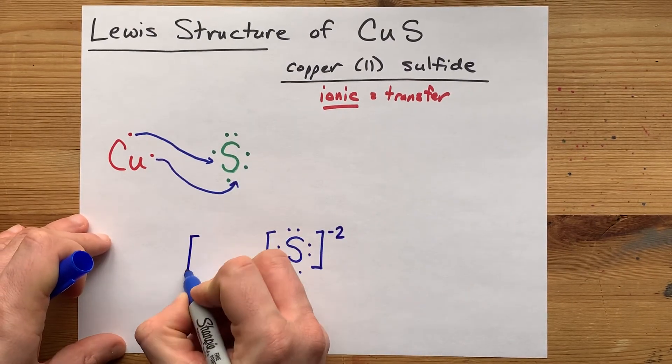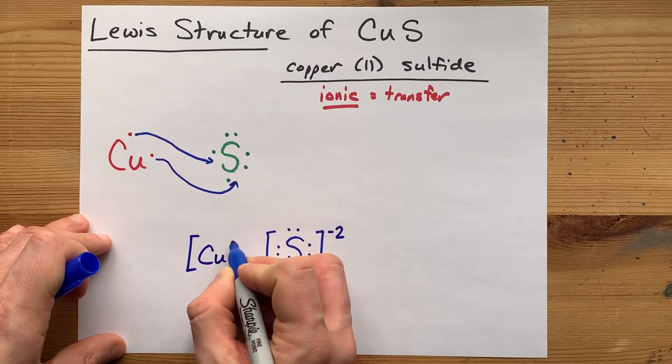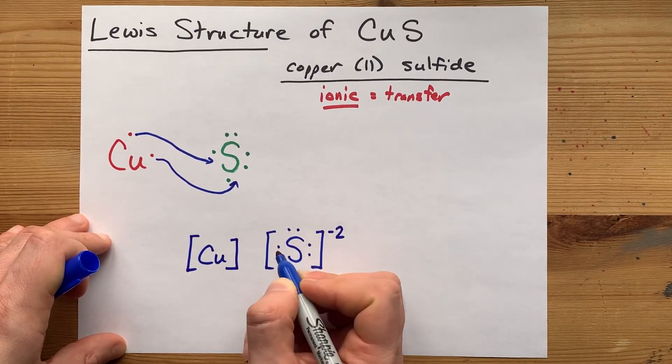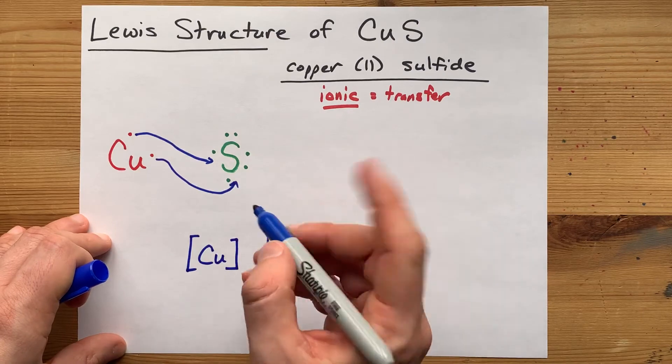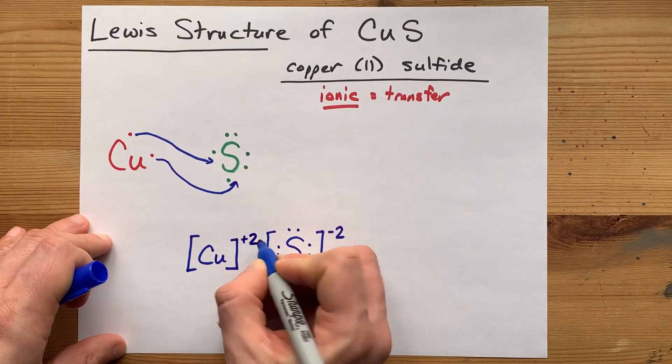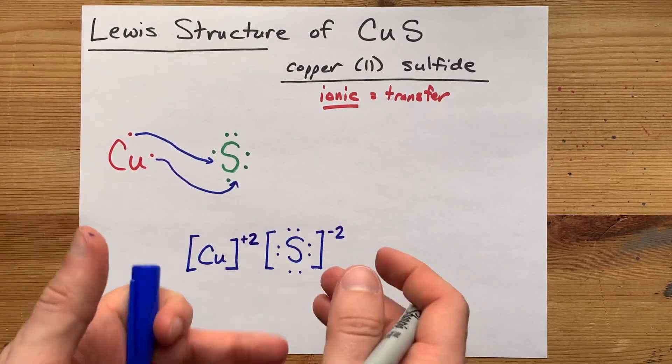Copper gave away both of its valence electrons, so draw it with none. And because it lost two minuses, it has a charge of positive 2. Subtracting a negative gives you a positive.